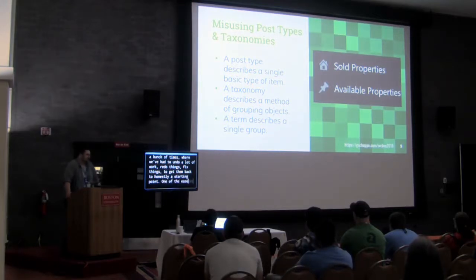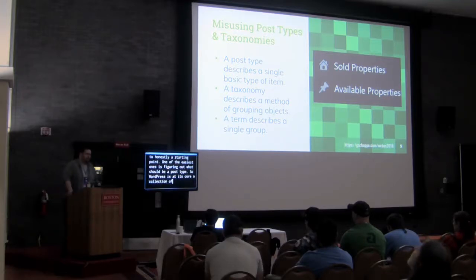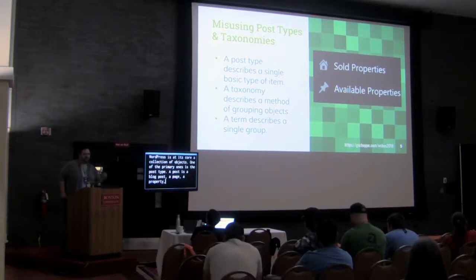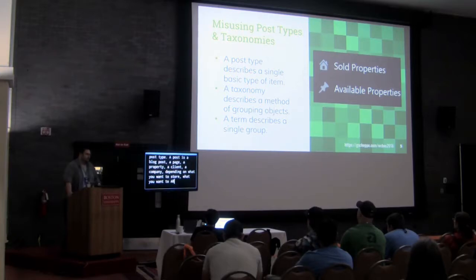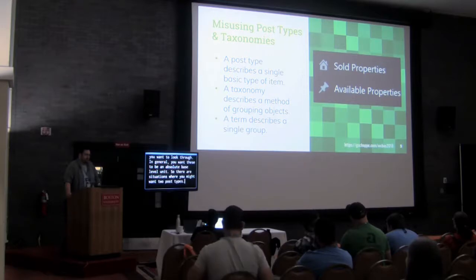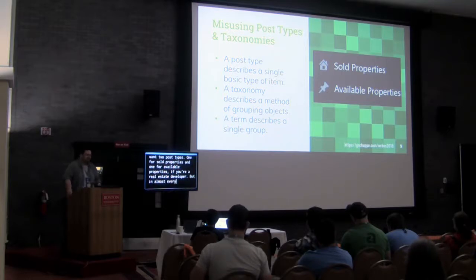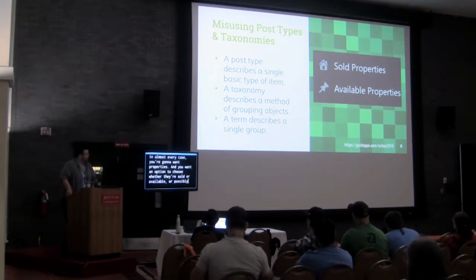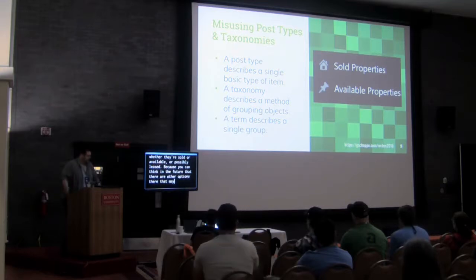One of the easiest ones is figuring out what should be a post type. WordPress is at its core a collection of objects, and one of the primary ones is the post type — a blog post, a page, a property, a client, a company — depending on what you want to store and archive. You want these to be an absolute base-level unit. For example, rather than two post types for sold properties and available properties, you almost always want one post type called 'properties' with an option to choose whether they are sold, available, or possibly leased, because future options may need to be added.